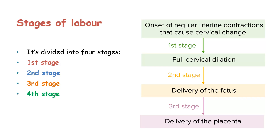Normally we divide labour into four stages, starting from the first stage to the fourth stage. In this tutorial, we shall break down each stage and the management that is done in each of the stages.